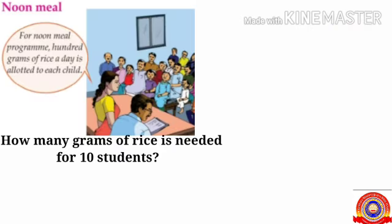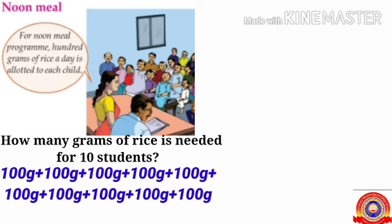Children, see the next activity: noon meal. For the noon meal program, 100 grams of rice a day is allotted to each child. How many grams of rice is needed for 10 students? Did you notice what the teacher told in the PTA meeting? For the noon meal program, 100 grams of rice is needed for one student. How many grams of rice is needed for 10 students? For one student, 100 grams of rice is needed. Then for 10 students, 10 times 100 grams of rice is needed. That is, 10 into 100 grams equals 1000 grams.